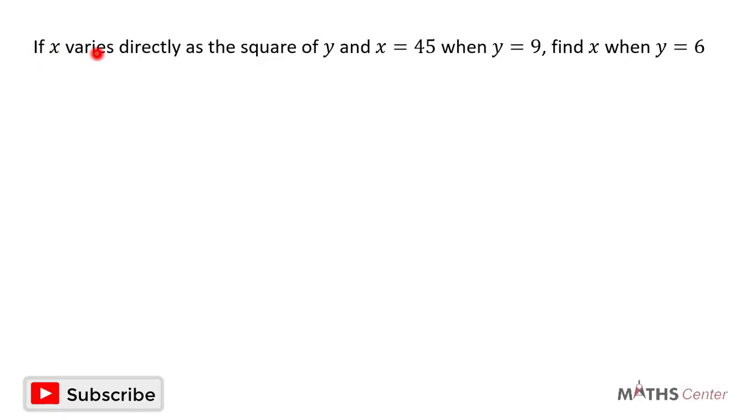If x varies directly as the square of y and x is equal to 45 when y is equal to 9, find x when y is equal to 6. X varies directly as the square of y. If x varies directly as the square of y, it's written as x is proportional to y squared.